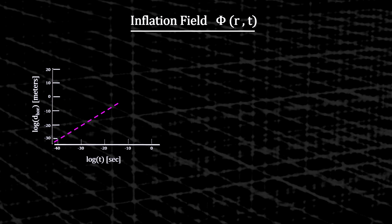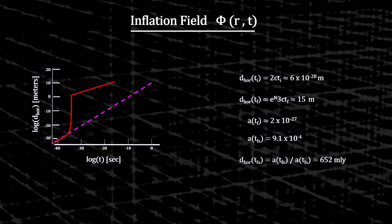The horizon distance at the start of inflation would have been submicroscopic. The horizon distance at the end of inflation, a tiny fraction of a second later, would have been the size of a whale. And the horizon distance at the time of last scattering would have been 652 million light-years, 800 times larger than without inflation. This puts every particle in the decoupling process that created the CMB into causal contact with every other particle, easily enabling thermal equilibrium.